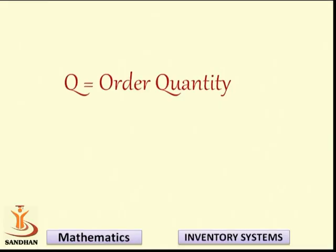Capital D indicates demand, and in all cases of our inventory models we would be talking about demand on an annual basis. Capital Q is the quantity ordered. If it is an economic quantity, we denote it by Q star; if it is a regular quantity, we denote it by capital Q — the order size per order placed to the supplier.